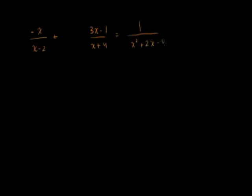Let's say I have negative x over x minus 2, plus 3x minus 1 over x plus 4, is equal to 1 over x squared plus 2x minus 8. To get rid of all the x terms in the denominators, we want to multiply by the least common multiple of these expressions. This last denominator can be factored — it factors as x plus 4 times x minus 2.